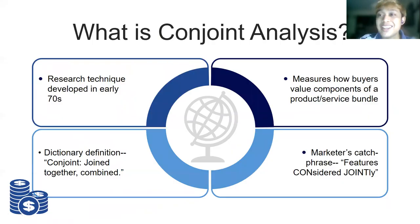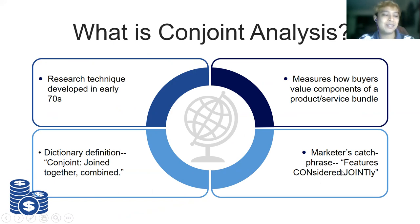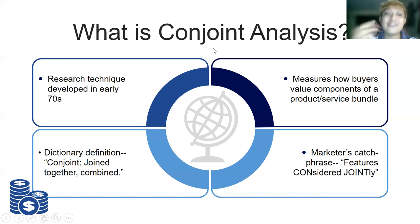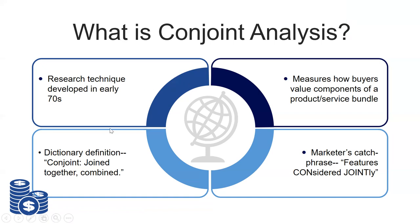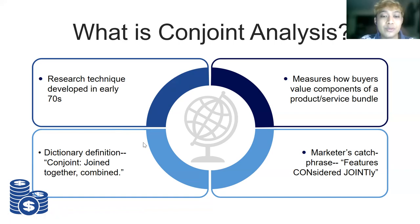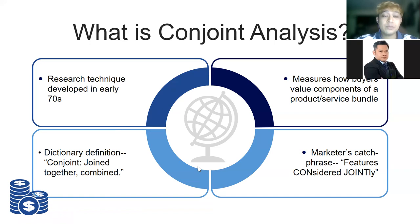What is conjoint analysis? 'Conjoint' means joined together or combined — it comes from the phrase 'considered jointly.' This is one of the techniques in multivariate analysis. You actually try to evaluate several different attributes at the same time. Is there someone who knows about conjoint analysis or has used it before? One student mentioned reading about it because he was told he might use conjoint analysis for his research.